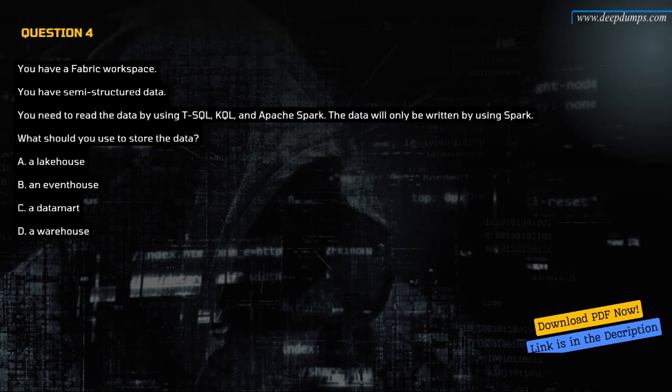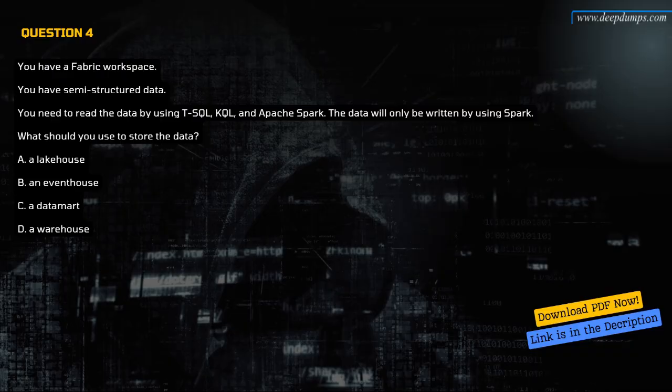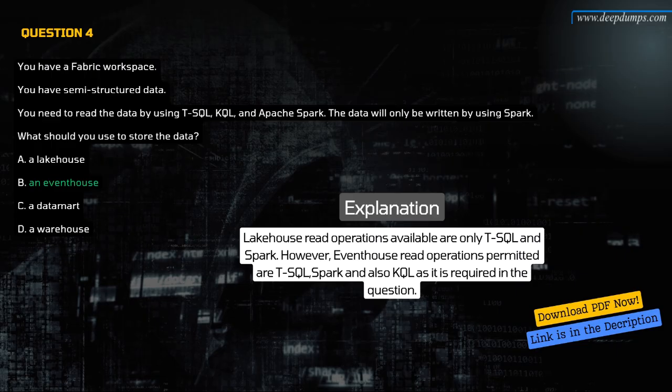Question 4. You have a Fabric workspace. You have semi-structured data. You need to read the data by using T-SQL, KQL, and Apache Spark. The data will only be written using Spark. What should you use to store the data? A. A lake house. B. An event house. C. A data mart. D. A warehouse. The correct answer is B. An event house. Event houses support T-SQL, KQL, and Spark for read operations, making them ideal for semi-structured and streaming data.